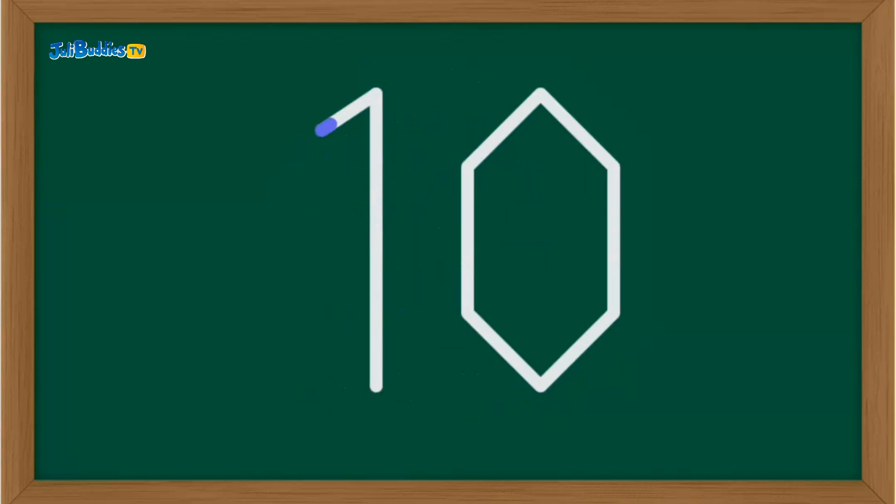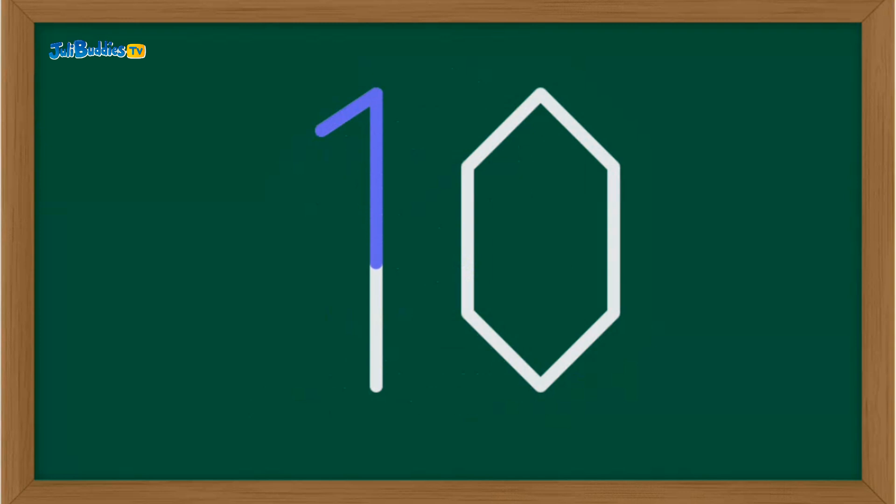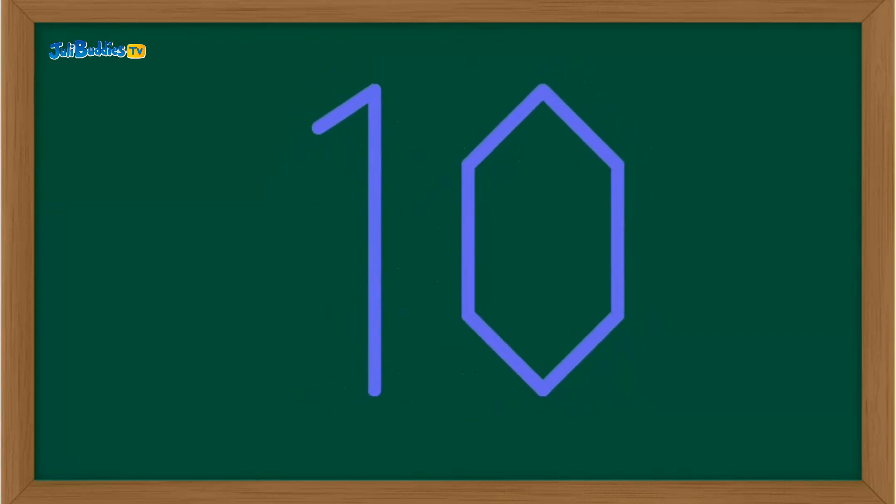We made it to ten. That's a one and a zero. Draw a straight line for the one, and then a big oval for the zero. You did it! That's ten. Let's keep going.